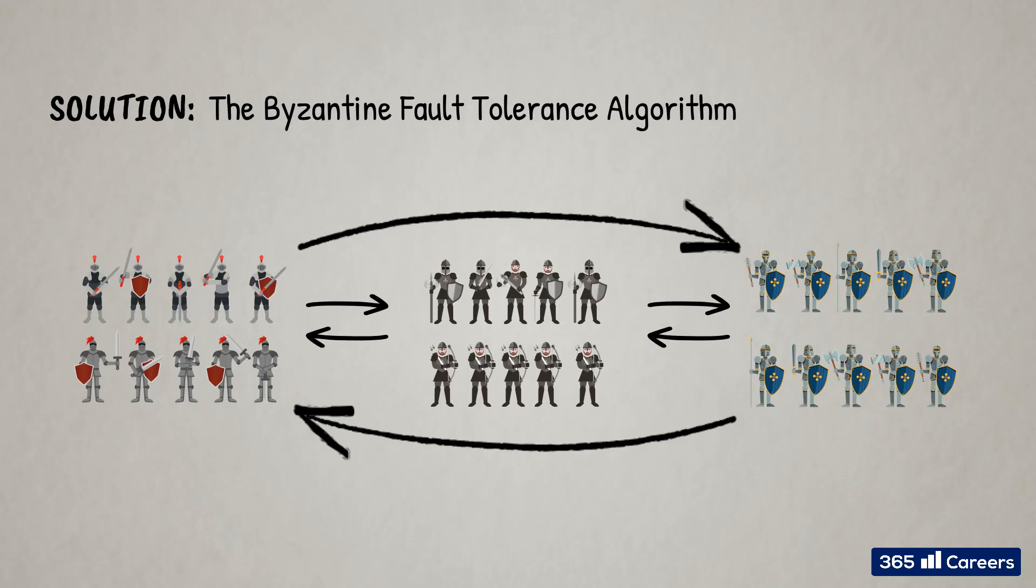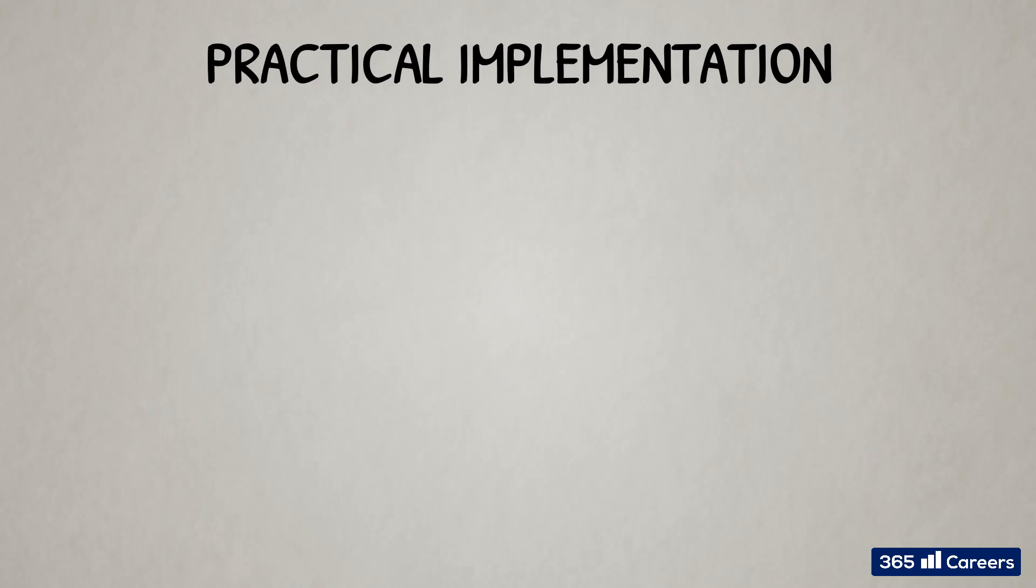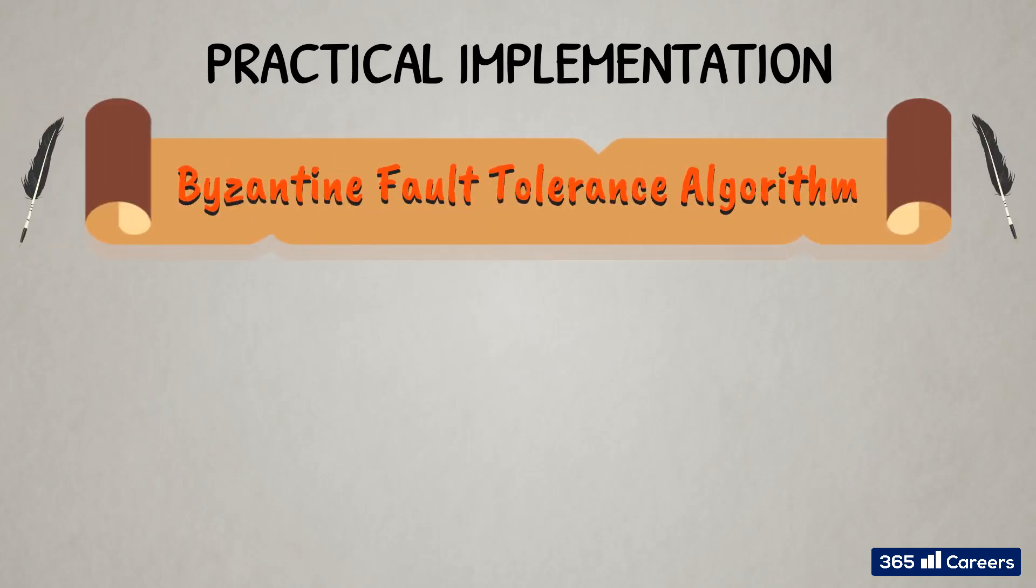Now that you are familiar with the problem, let's see its solution. It's called the Byzantine Fault Tolerance Algorithm. Over the years, there have been several proposed theoretical solutions involving game theory and math. The first practical implementation of Byzantine Fault Tolerance Algorithm came with Bitcoin's proof-of-work.